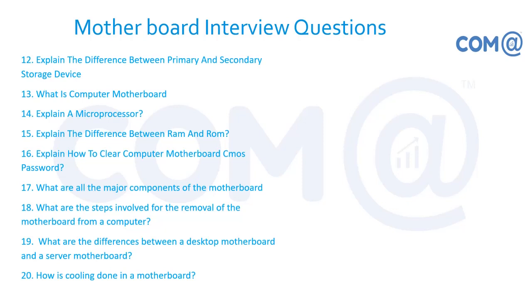Major components of the motherboard are the processor, memory, and I/O controllers. Steps for motherboard removal: wear an electrostatic strap, open the system, remove components one by one, then remove the screws and take out the motherboard. Cooling is done via a chassis fan that rotates continuously, keeping the system cool. Ensure good air circulation around the system, and avoid placing it near windows where rain could cause water damage and short circuits.